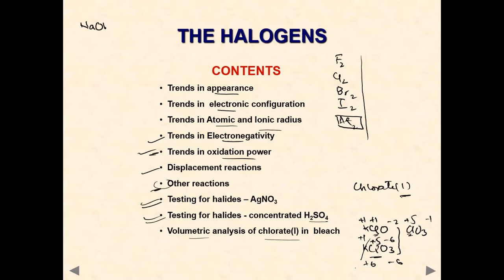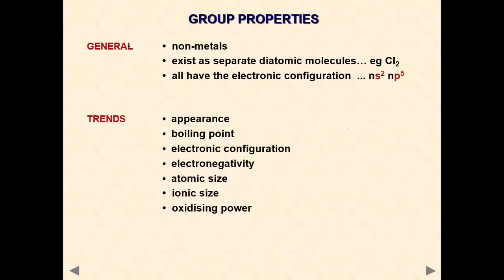When we discuss the reactions of chlorine with NaOH, we will look at what products are made. Two conditions are important: cold and dilute, and hot and concentrated. Each condition gives different products, and we will see these in the general properties section.